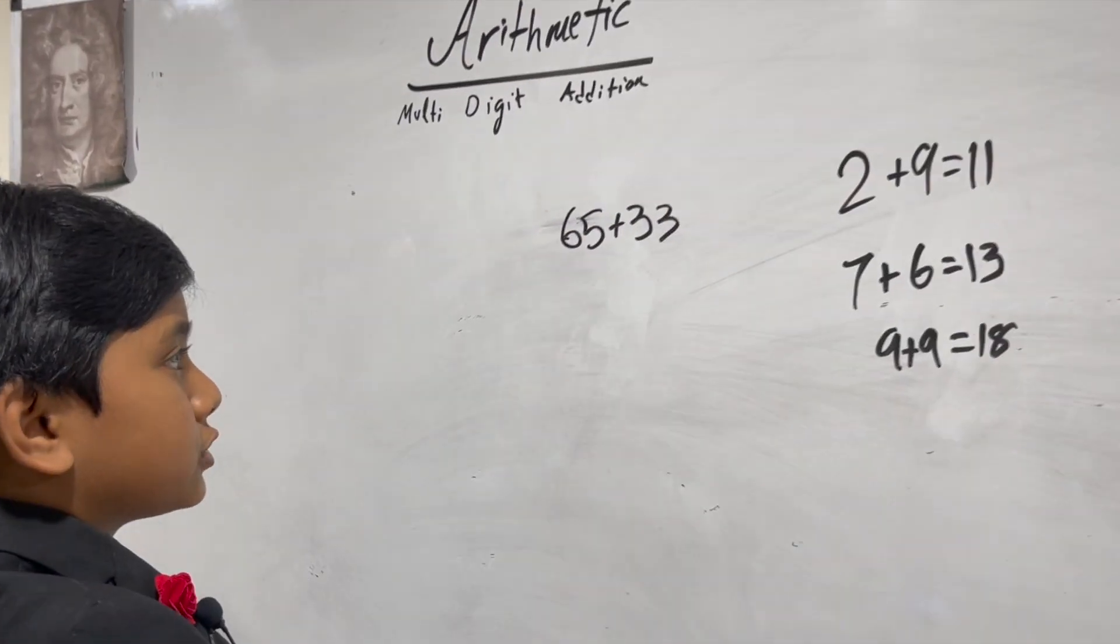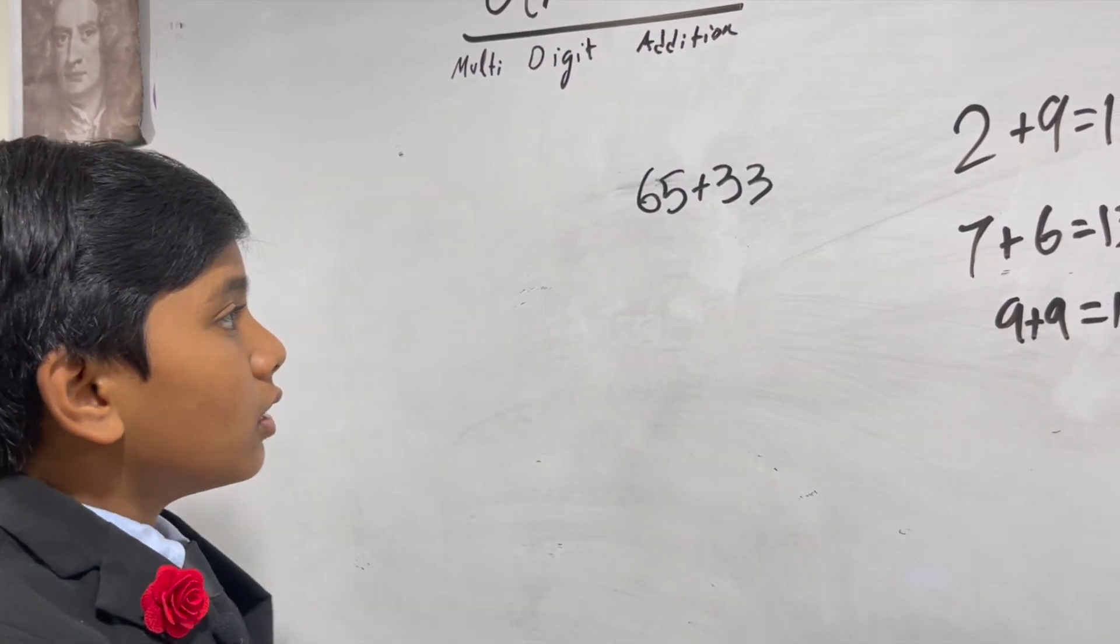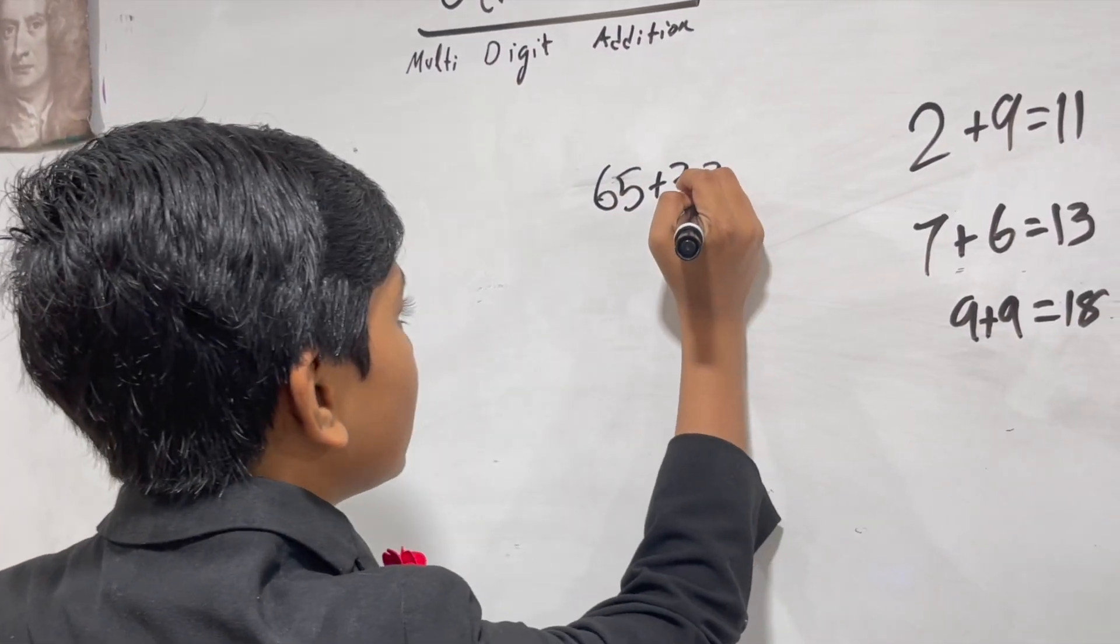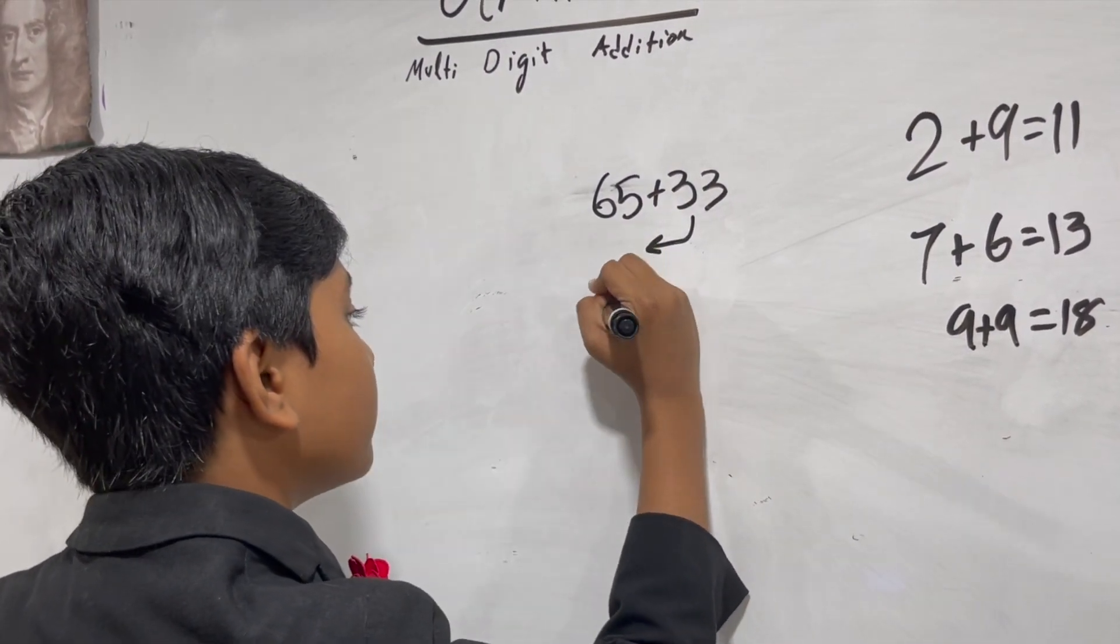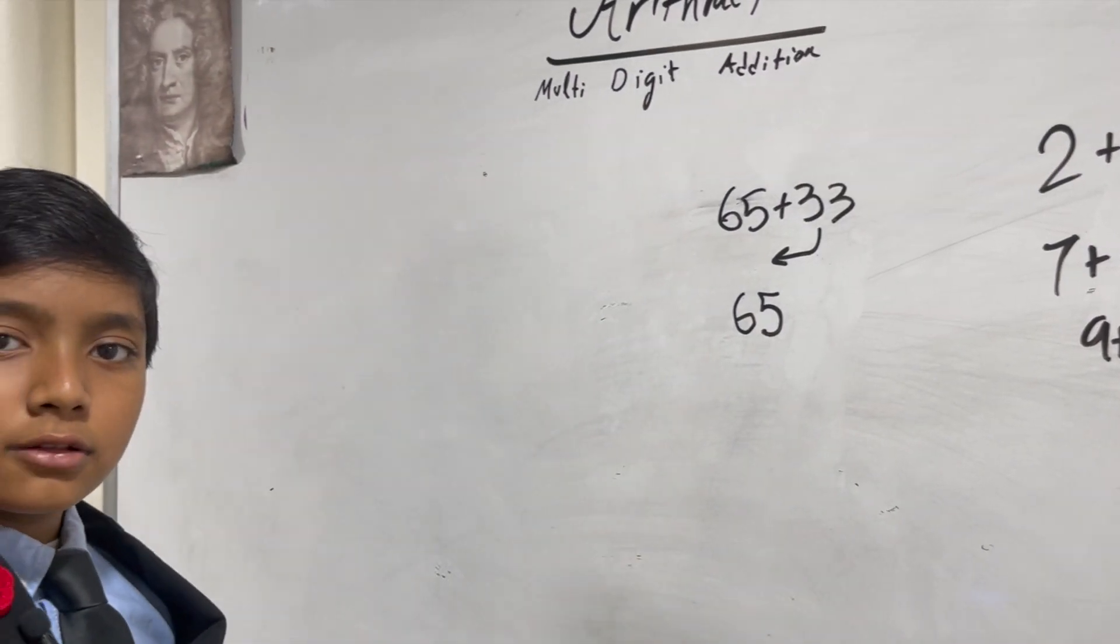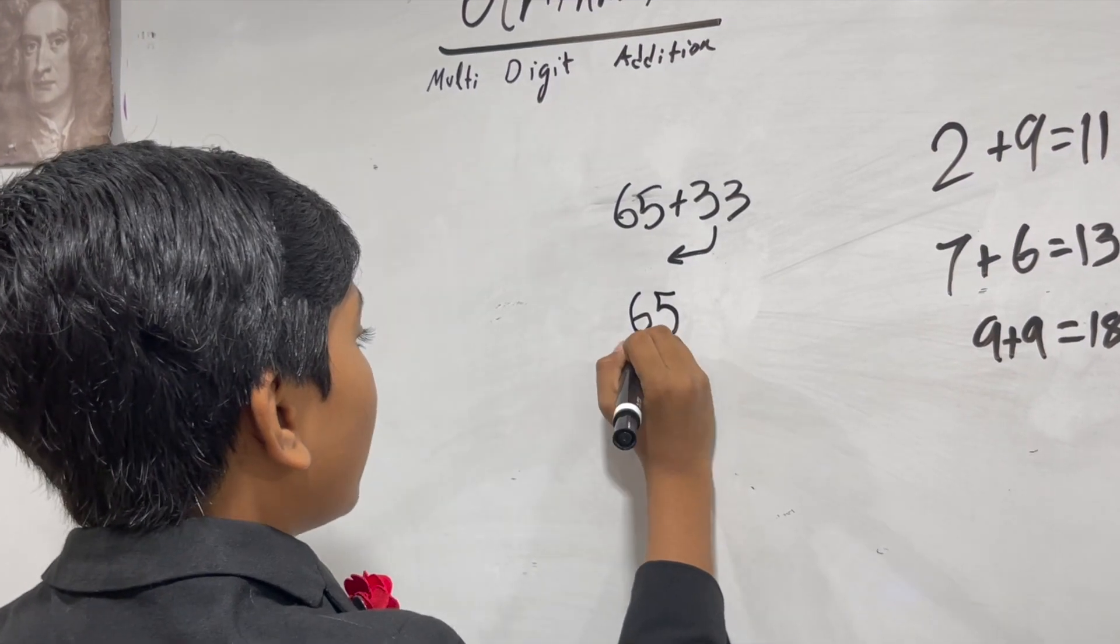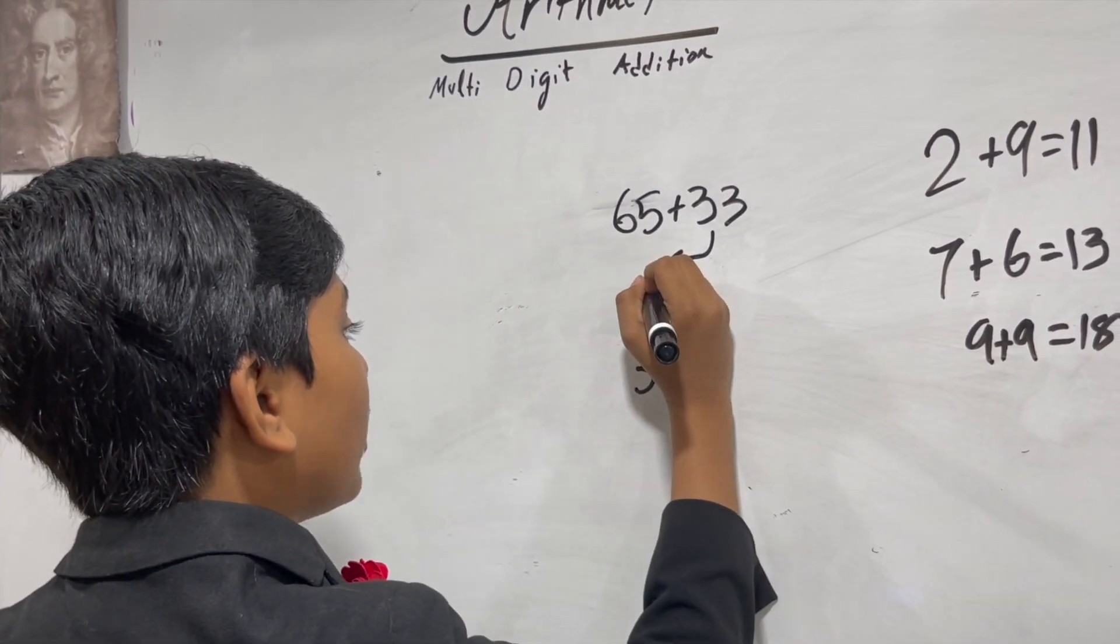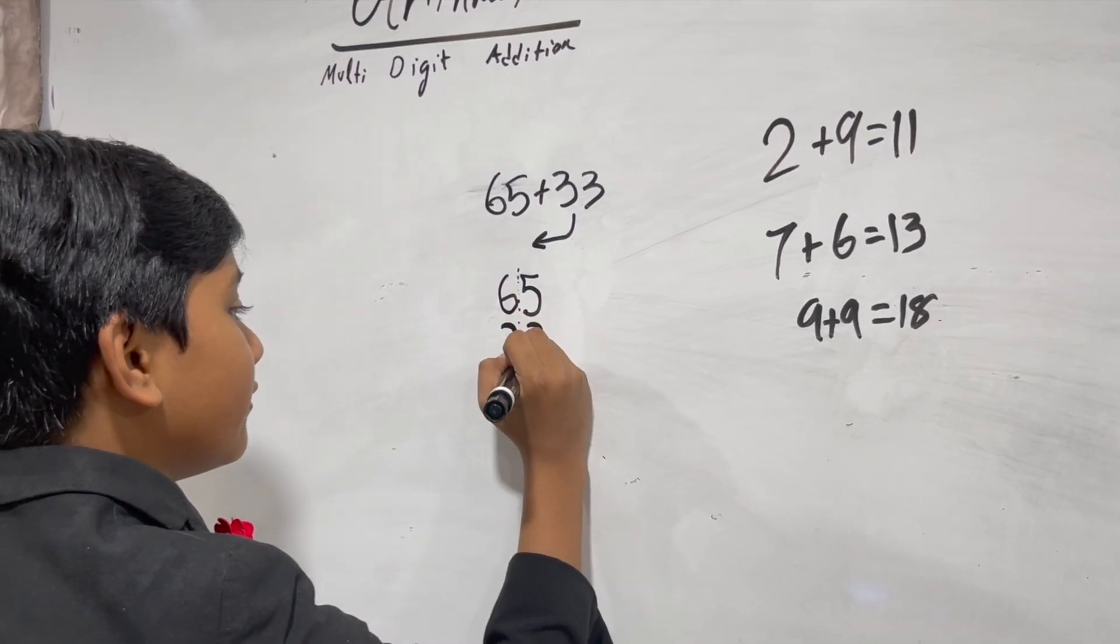Now this might look tricky at first glance, but what we're gonna need to do is put this 33 over here below the 65. Now we put the 33 in a way such that the ones place of the 33 lines up with the ones place of the 65.